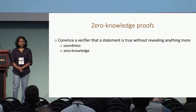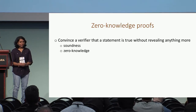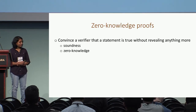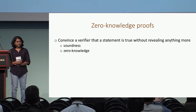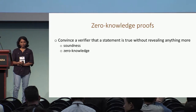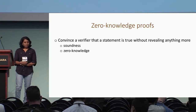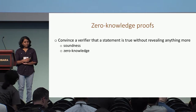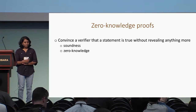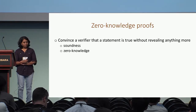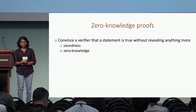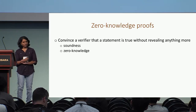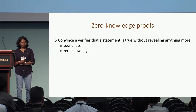Zero-knowledge proofs provide a powerful tool that allows a prover to convince a verifier that a statement is true without revealing any further information. A zero-knowledge proof satisfies the following two properties: soundness, which means that a cheating prover cannot convince a verifier of a false statement, and the property of zero-knowledge, which means that a cheating verifier cannot learn anything more than the validity of the statement itself.